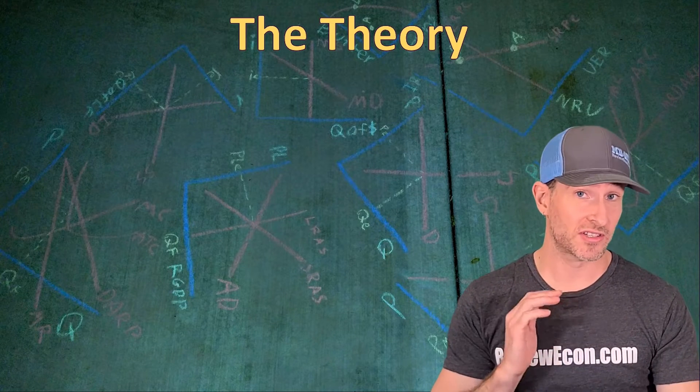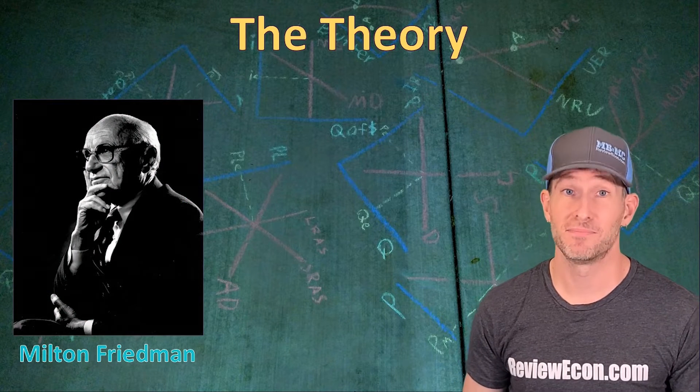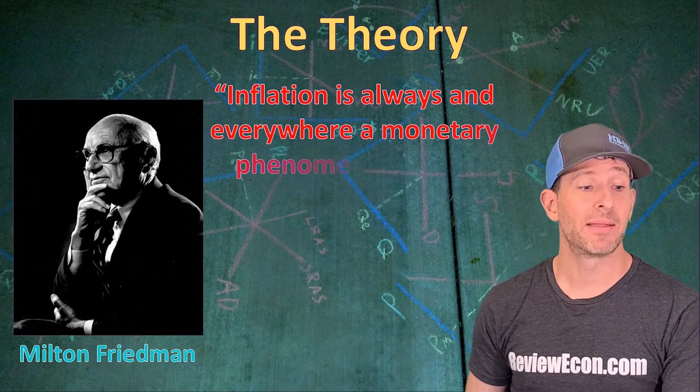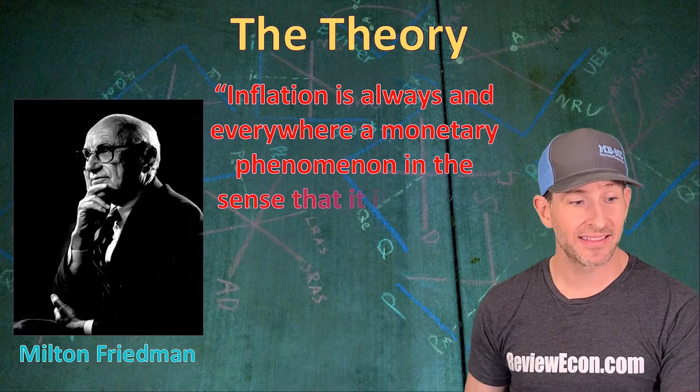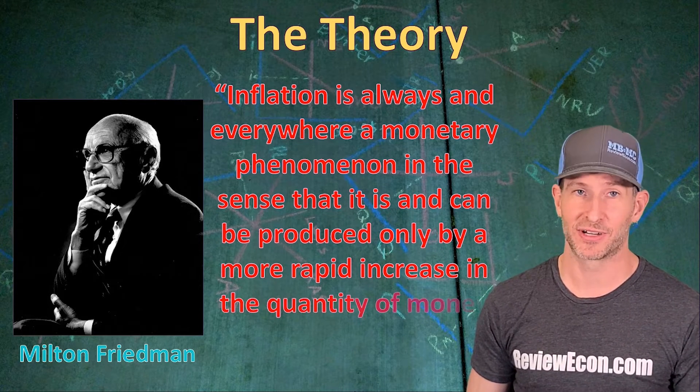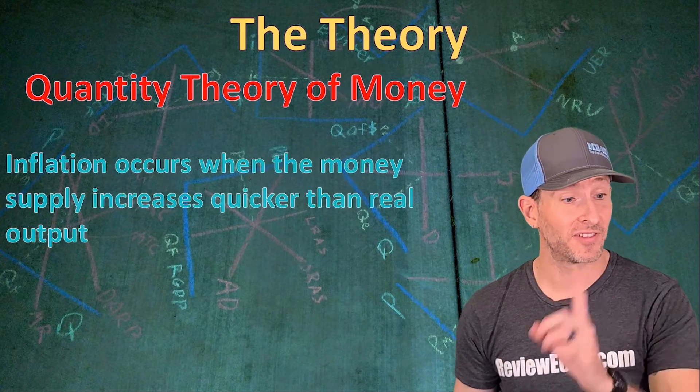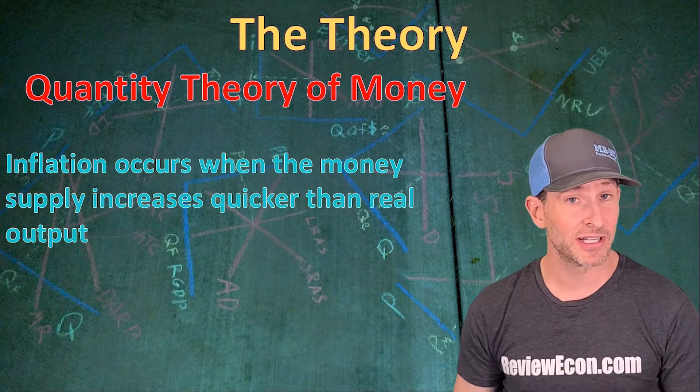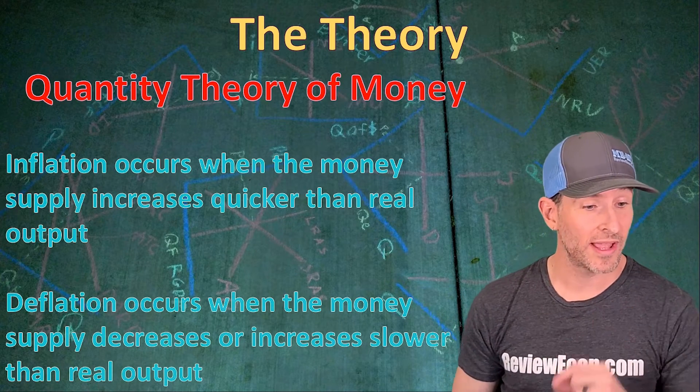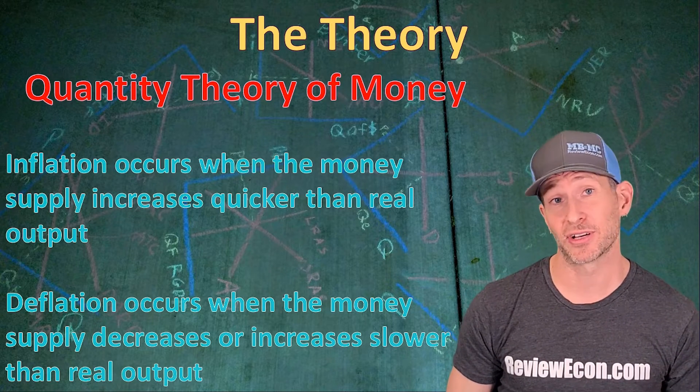First, we're going to go over what this quantity theory of money is. It can all be summed up by this quote from famous economist Milton Friedman. He said, inflation is always and everywhere a monetary phenomenon in the sense that it is and can be produced only by a more rapid increase in the quantity of money than in output. What that quote means is that inflation occurs when the money supply increases quicker than the quantity of real output. And that means that deflation could occur when the money supply decreases or increases slower than the increase in real output.